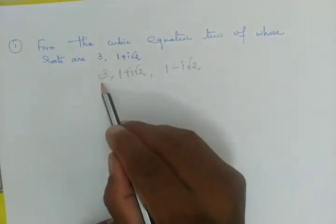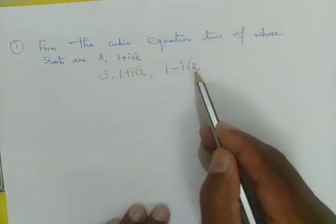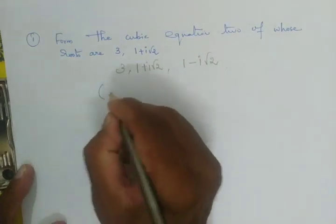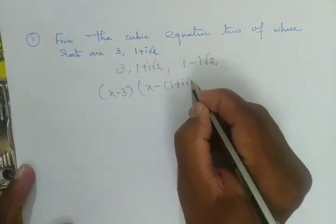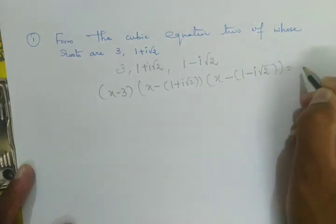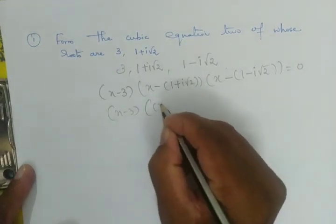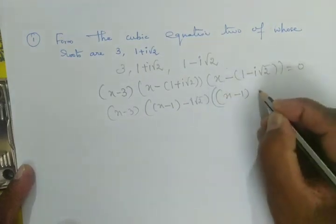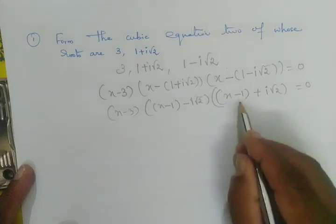The first root is a real number. The second root is a complex number, so we will find its conjugate root as the third root. The three roots are alpha, beta, gamma. Now we identify them: x-3, x-(1+i√2), and x-(1-i√2) equal to 0.